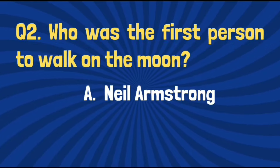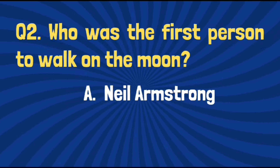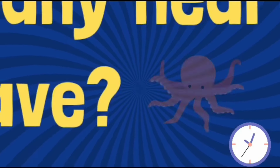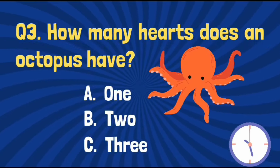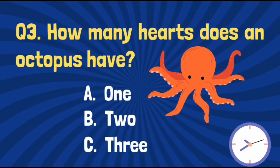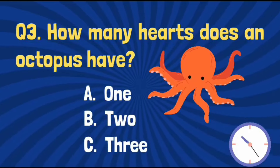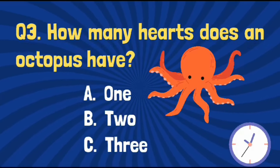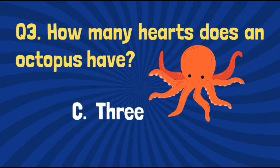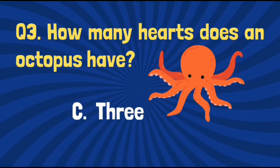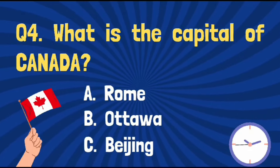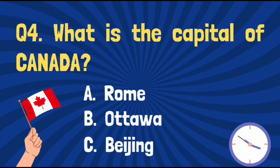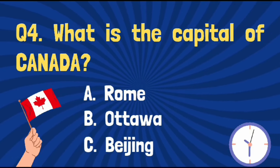The right answer is option A — Neil Armstrong. How many hearts does an octopus have? The right answer is option C — three. What is the capital of Canada?